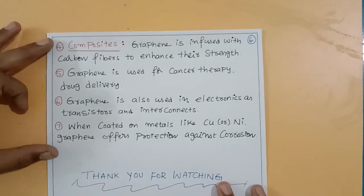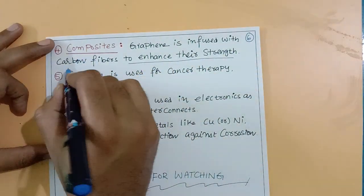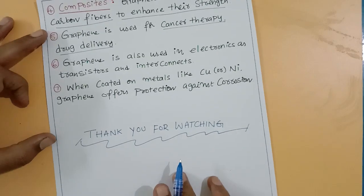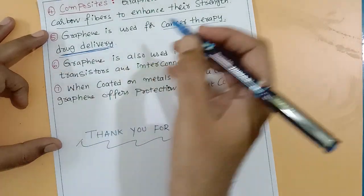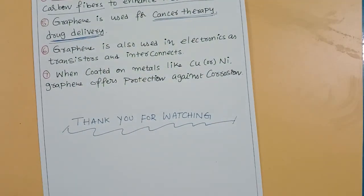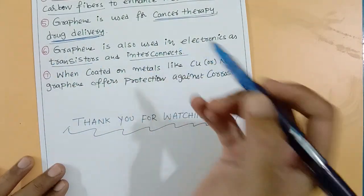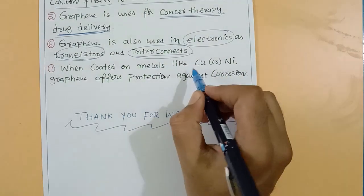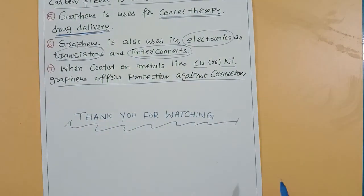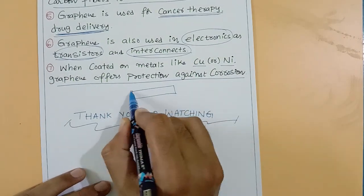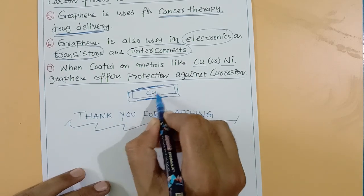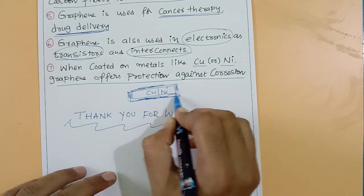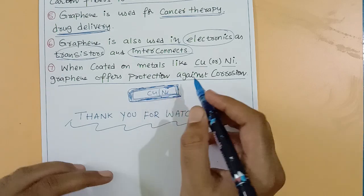Fourth application — composites: graphene is infused with carbon fibers to enhance their strength while keeping them lightweight. Graphene is also used for cancer therapy and drug delivery, delivering drugs to target organs. In electronics, graphene is used as transistors and interconnects in devices. Finally, when coated on metals like copper or nickel, graphene offers protection against corrosion — adding graphene to metal paint provides better corrosion prevention.